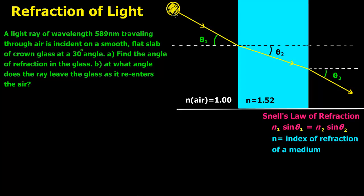We've got a light source up here, and the ray is striking the crown glass at a 30 degree angle as compared to the normal — this dotted line is the normal. So it comes in and strikes the crown glass at 30 degrees, and when it is in the crown glass it is going to refract by a certain degree — it's going to bend at a certain angle. That's what we need to find: theta 2.